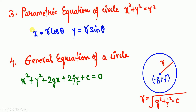The fourth format is the general equation of a circle, which is very important — it was once asked in a DRDO exam. The general equation is x² + y² + 2gx + 2fy + c = 0. The center is (−g, −f) and the radius is r = √(g² + f² − c). When a given equation is compared with this general form, you can extract the values of g, f, and c and substitute to find the radius.